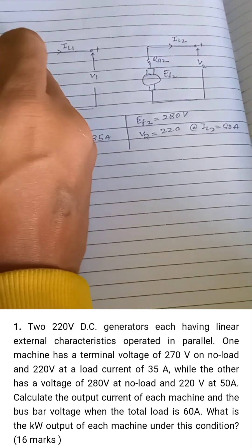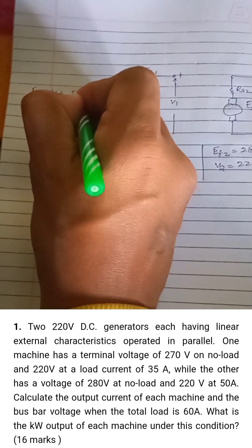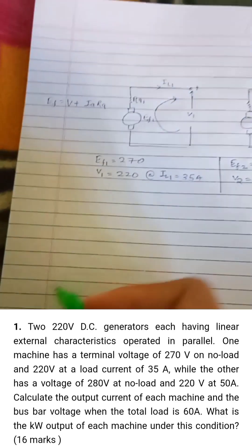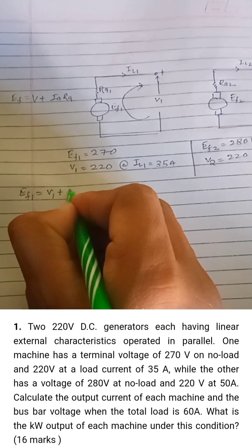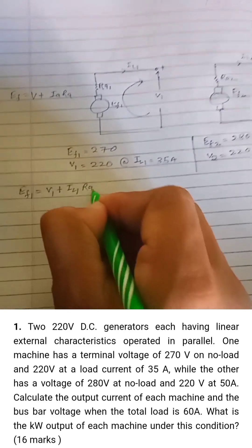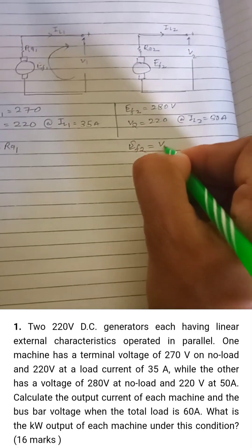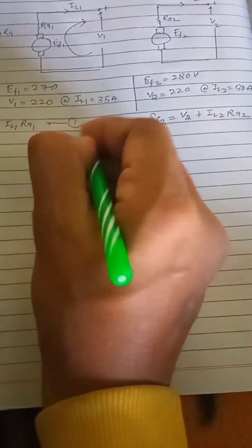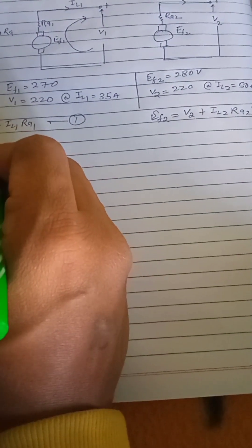Let's write the general equation for a generator by applying KVL: ef = v + ia * ra. For generator 1, this gives ef1 = v1 + il1 * ra1 — call this equation 1. For generator 2, ef2 = v2 + il2 * ra2 — call this equation 2. From equations 1 and 2, substituting the given values, we will obtain the armature resistances ra1 and ra2.